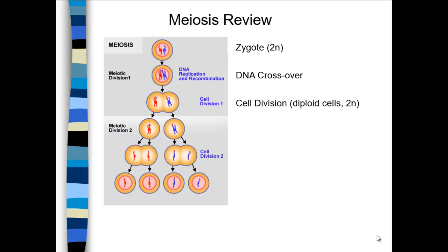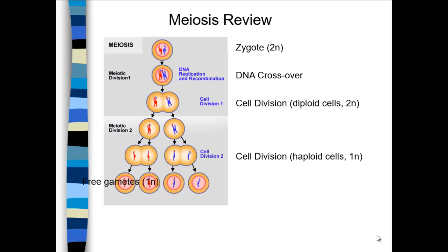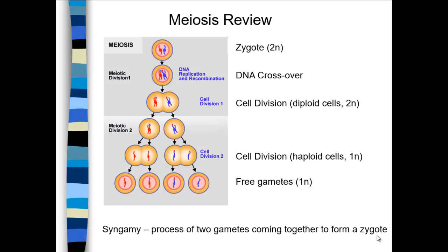In cell division number one, you still have diploid cells because they've produced sister chromatids. In cell division number two, you have single chromosomes — haploid cells — which mature to become gametes. Both sperm and egg, and many protozoa reproduce this way. After two gametes are formed, they undergo syngamy, which is fertilization — when two gametes come together and form a zygote.